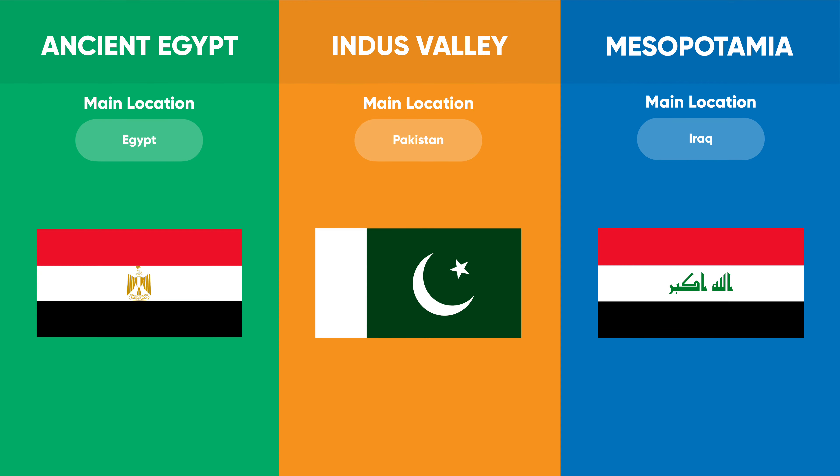Ancient Egypt was located in northeastern Africa and had four clear geographic zones: the Delta, the Western Desert, the Eastern Desert, and the Nile Valley.